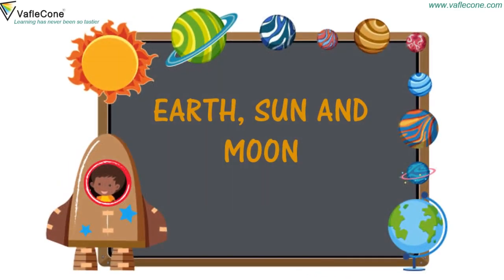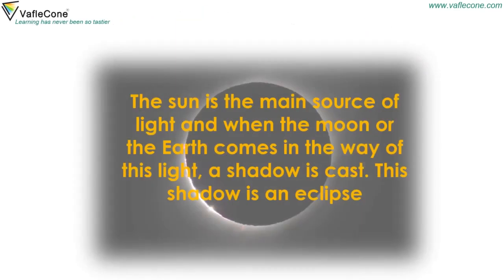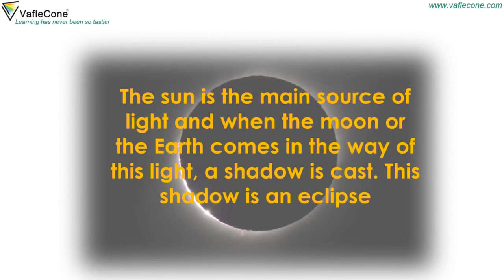Earth, Sun and Moon. The sun is the main source of light, and when the moon or the earth comes in the way of this light, a shadow is cast. This shadow is an eclipse.